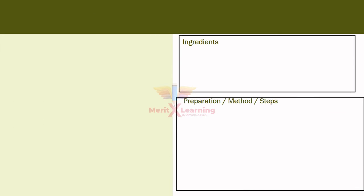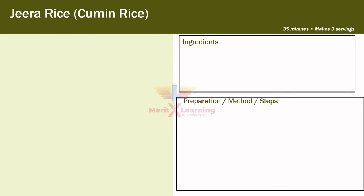Here I have taken one more example of a recipe — that is for jeera rice. Jeera is called cumin in English. This recipe takes 35 minutes to prepare and gives 3 servings.